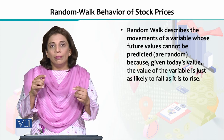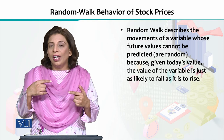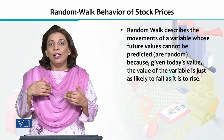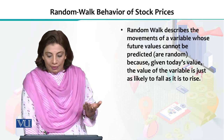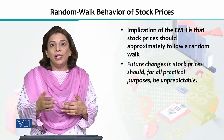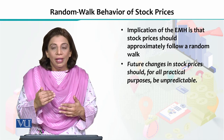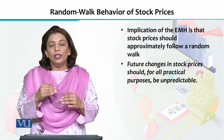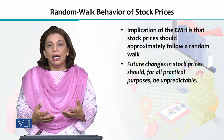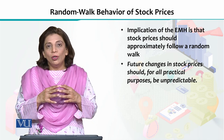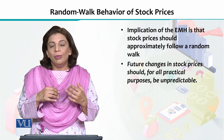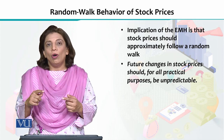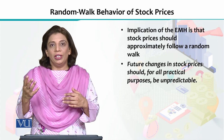That means every next value of that stock price is random, cannot be predicted, cannot be assessed — what it is going to be. So it can go up, it can go down, it can remain the same. This is one of the implications of the efficient market hypothesis which we have just discussed — that in stock markets, when we look at stock prices, we assume that they follow a random walk pattern.